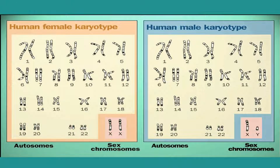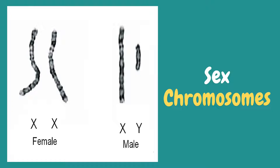In human karyotype, each cell normally contains 23 pairs of chromosomes for a total of 46. Twenty-two of these pairs are called autosomes or body cells, which look the same in both males and females, while the 23rd pair is the sex chromosomes, which differ between males and females. The X and Y chromosomes, also known as the sex chromosomes, determine the biological sex of an individual.